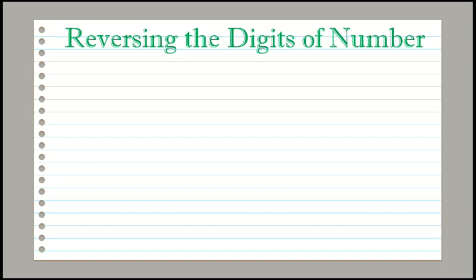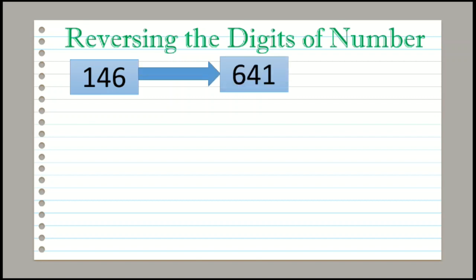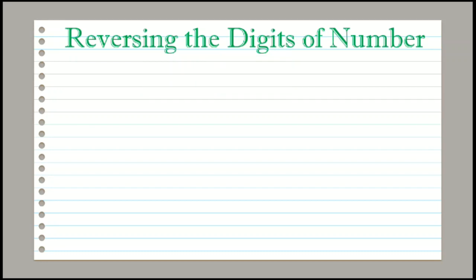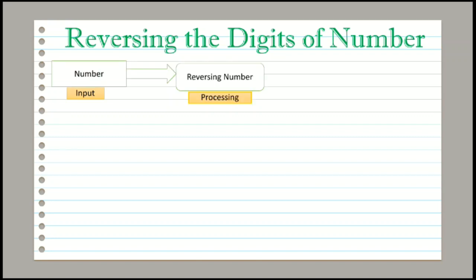The given problem is that you have to reverse a given number. Suppose the given number is 146, then the output should be 641. The number you want to reverse is the input, reversing the given number is the processing part, and printing the reverse number is the output part.